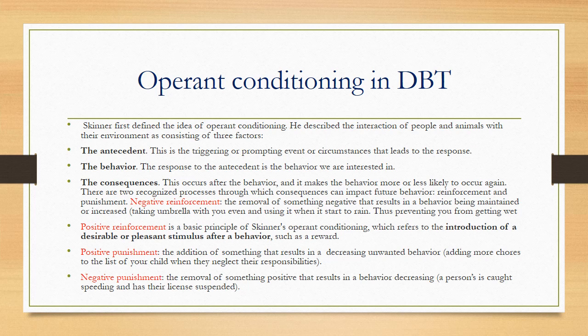Positive punishment is the addition of something that results in decreasing unwanted behaviors. Negative punishment involves the removal of something desirable — for example, if a person has a habit of speeding and their license is suspended, that is an example of negative punishment. We will discuss these four quadrants in detail with clinical examples to help the patient.